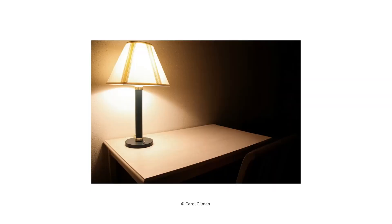Going back to the table lamp — while it can be indirect in some ways, it's also very direct: the light coming out from the bottom of the shade shines right down on the table. If you're close enough, you can read a book or look at your phone under that light, making it a focused, task-oriented light source.